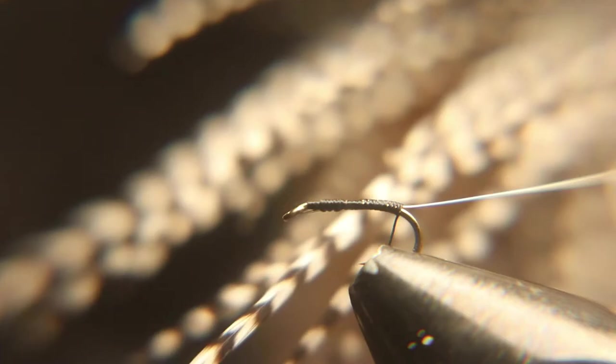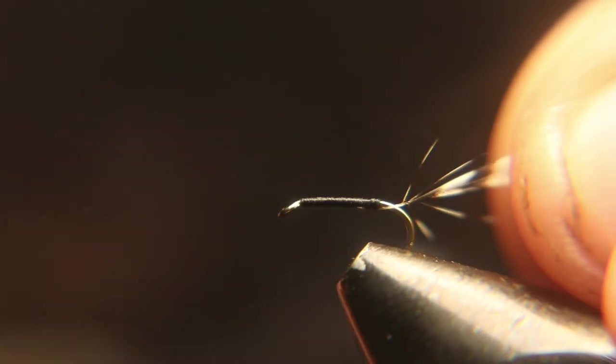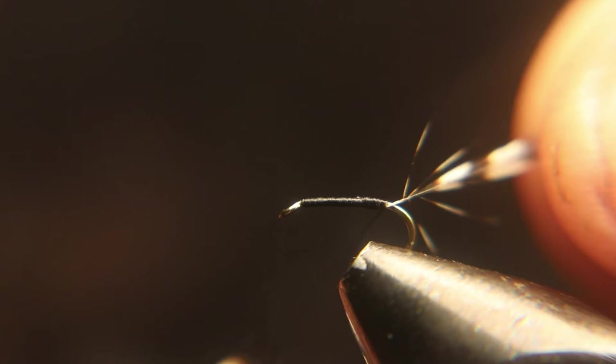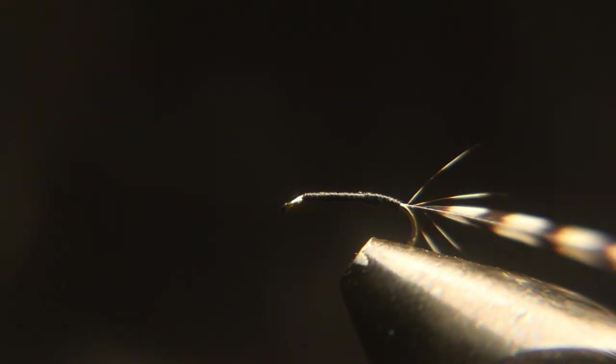Now you want to tie in a grizzly hackle. If you don't have a hackle that's quite the exact size to the bend of the hook, don't worry. This is a griffis gnat, which is supposed to represent a clump of gnats floating down the creek.